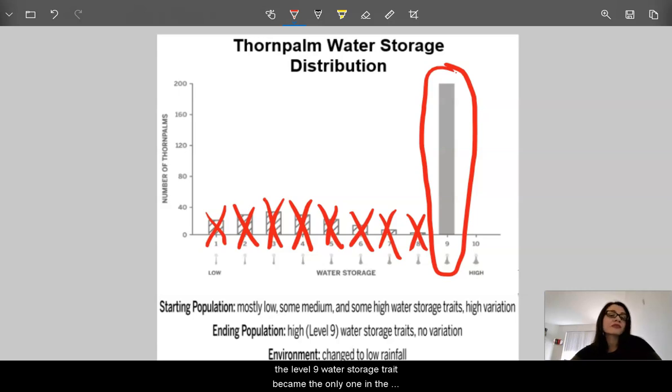Over time, the level 9 water storage trait became the only one in the population because it was most adaptive to its new environment.